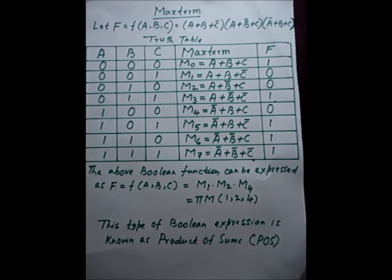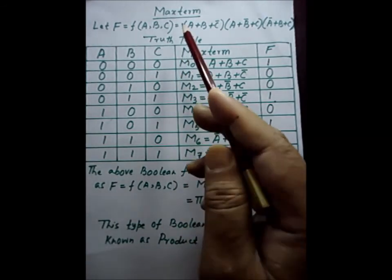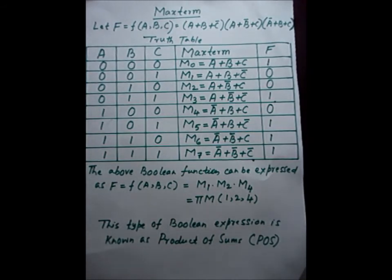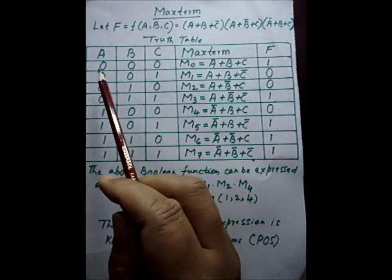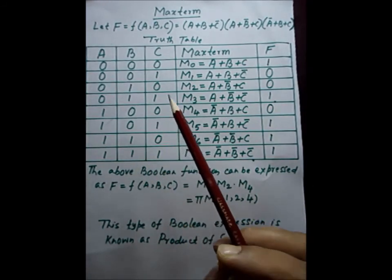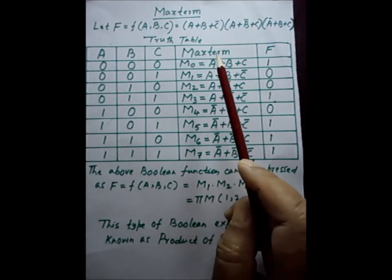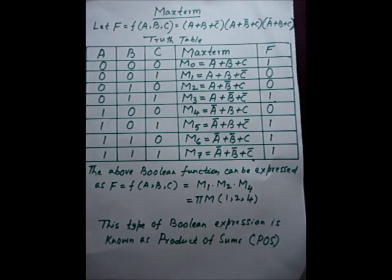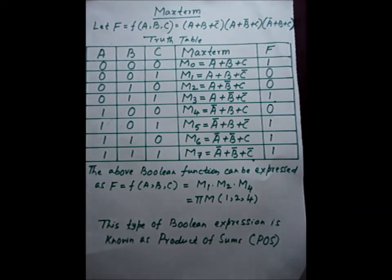If there are 4 variables, the variation should be from 0 to 15, giving 16 variations. For minterms with 4 variables, wherever the assignment is 0 it is complemented; wherever it is 1, it is not complemented — and i varies from m0 to m15. For maxterms with 4 variables, wherever assignment is 0 there is no complement, and wherever assignment is 1 there is a complement of that particular variable. This is all about minterms and maxterms.